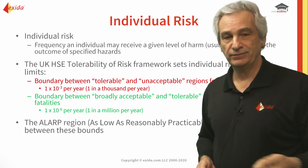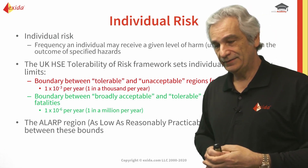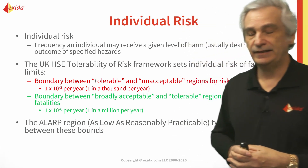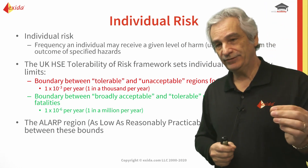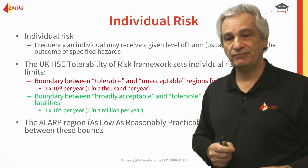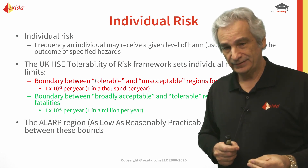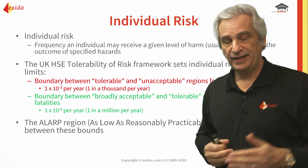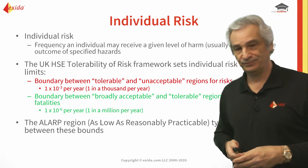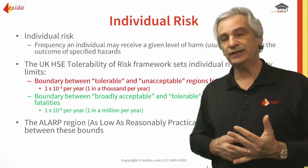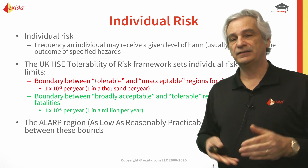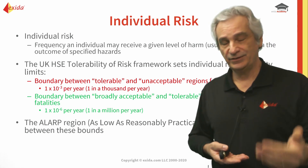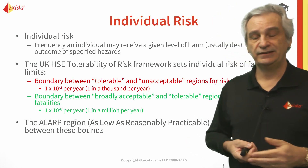The UK Health and Safety Executive defined a boundary for plant operators between one fatality every thousand years down to one fatality every million years. For the public, it's an order of magnitude better: one fatality every ten thousand years down to one fatality every million years. That region is known as the ALARP region. When companies define their risk tolerance they need to consider ALARP. Most companies in the US use either 10⁻⁵ (one fatality every hundred thousand years) or 10⁻⁴ (one fatality every ten thousand years).